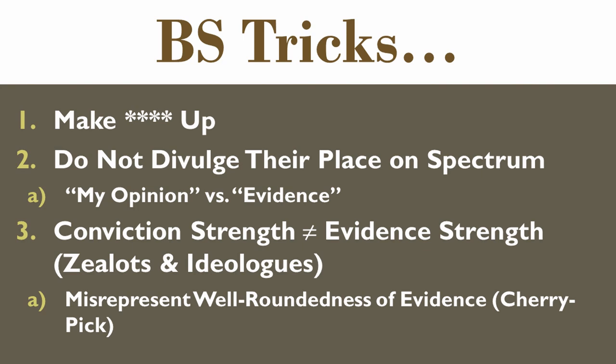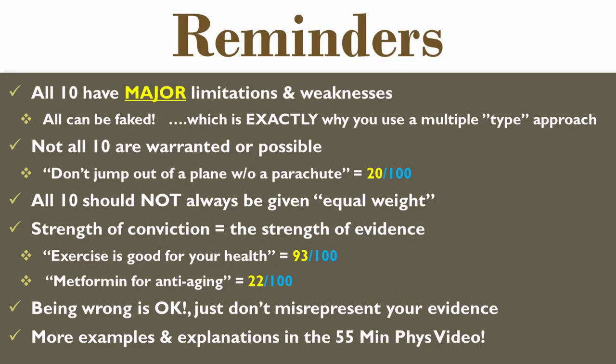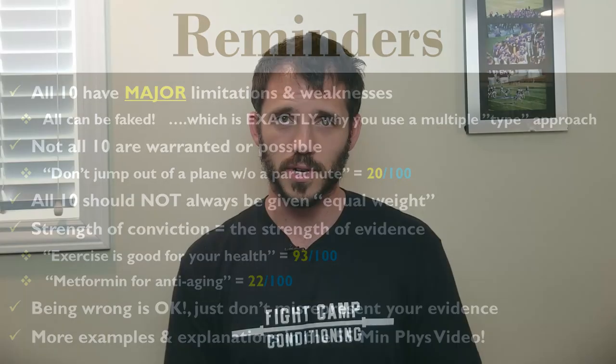If there's strong anecdotal and molecular evidence, just say so — but if it doesn't make sense in other categories, acknowledge that too. Saying 'there's good evidence here and here, so I'm really excited about this' is very different from saying 'this 100% works and you're an idiot if you don't believe it.' That's the trick — cherry-picking categories sounds very convincing. And remember: being wrong is totally fine, just don't misrepresent your evidence. That's where people really feel lied to. There's a 55-minute version with more examples if you want to go deeper.